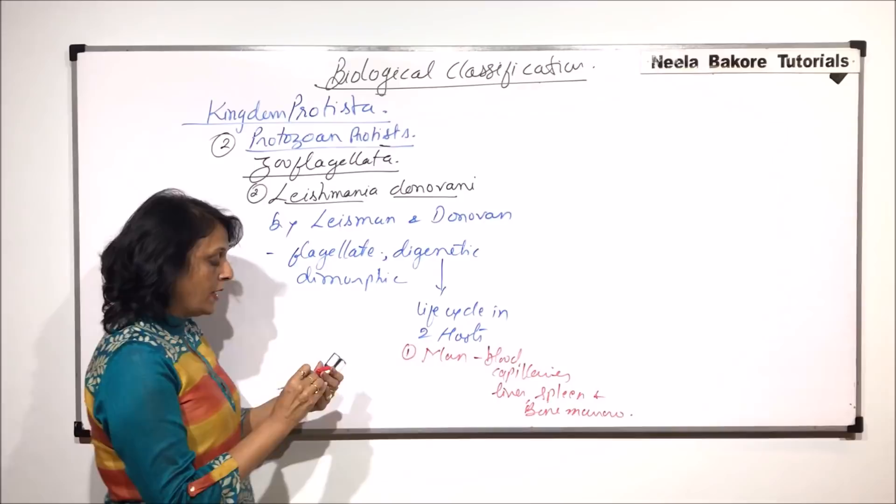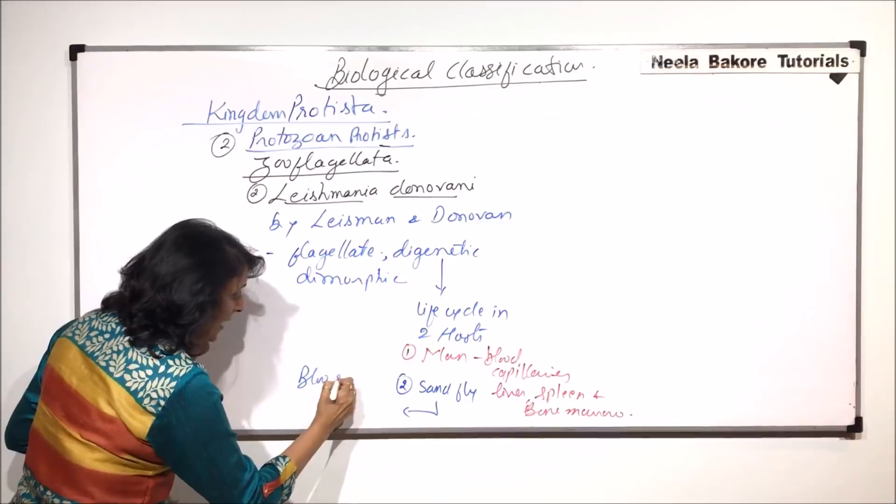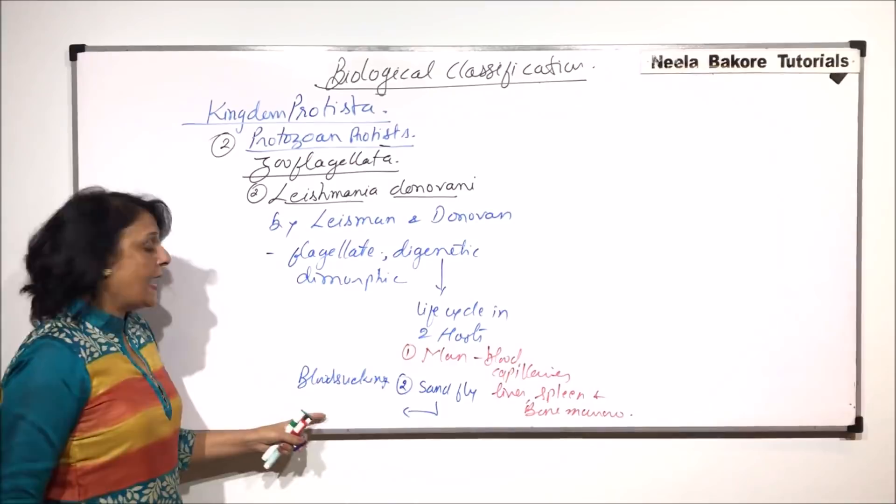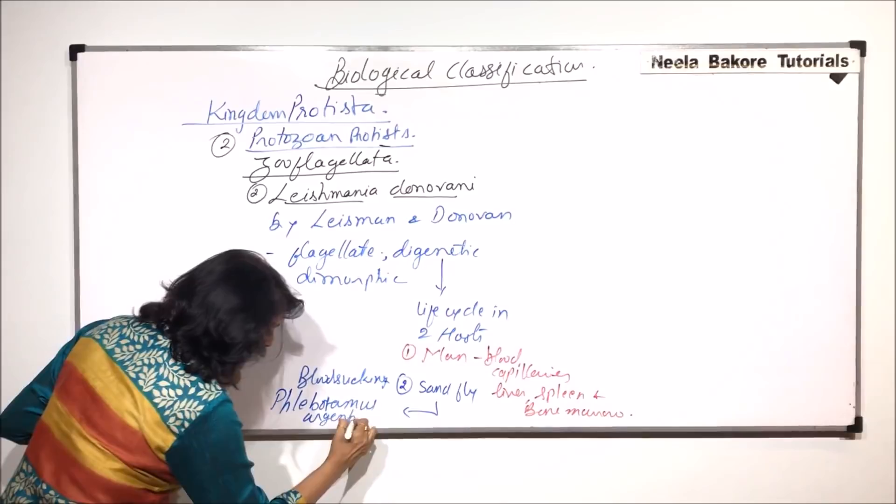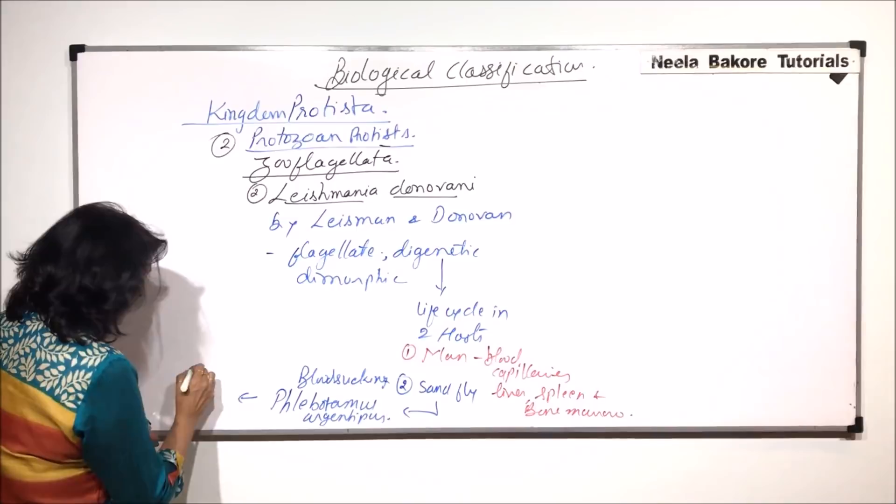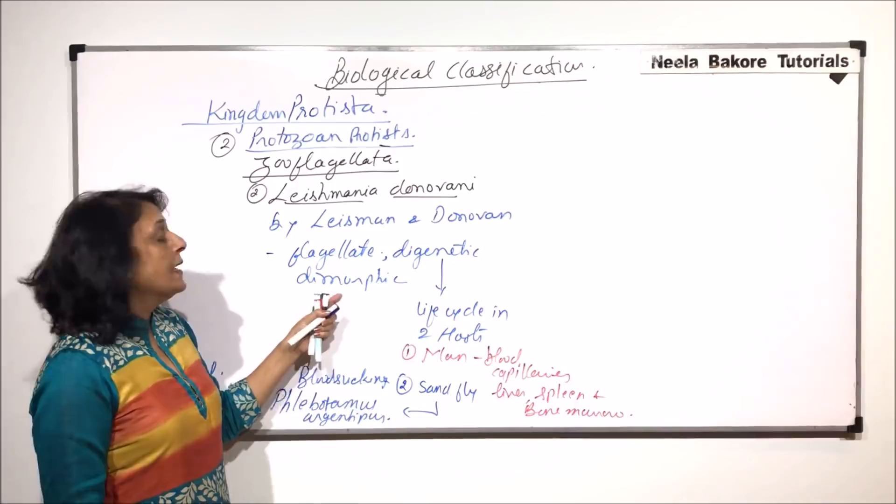The second host is commonly known as sand fly. Sand fly is a blood-sucking insect and its scientific name is Phlebotomus. In case of this sand fly, the pathogen is found in the salivary glands. The life cycle is completed in these two hosts: humans and sand fly.